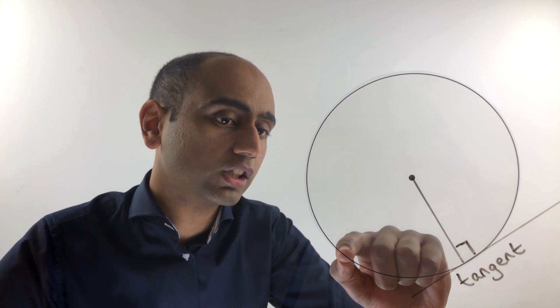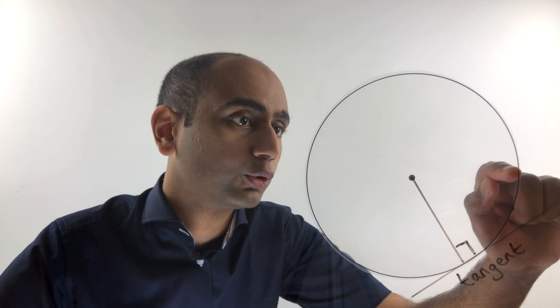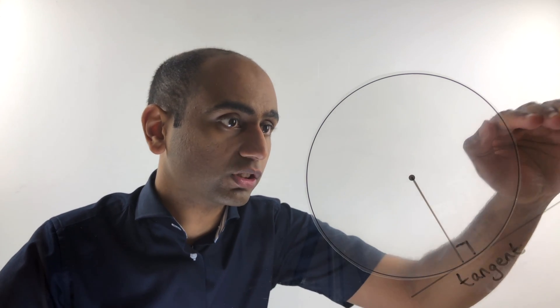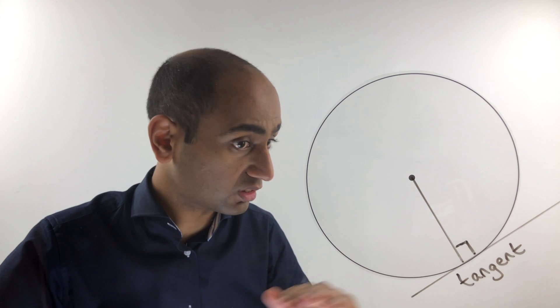It's not a line that goes through the circle, say here, and then through the circle again there. That would be a line going through the circle at two points. The tangent doesn't do that.